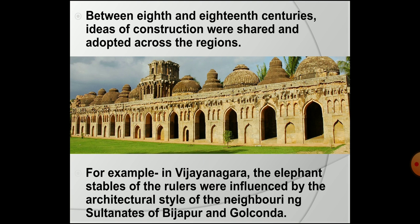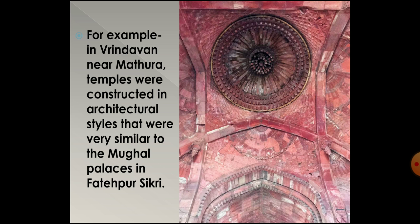Between the 8th and 18th centuries, a lot of construction activities took place, and different regions shared their ideas with each other, adopting one another's traditions. For example, the elephant stables of the rulers in Vijayanagar had great architectural influence from the style of the Bijapur and Golconda Sultanate. Another example: the temples in Vrindavan near Mathura had many similarities with the architectural style of the Mughal palace in Fatehpur Sikri.